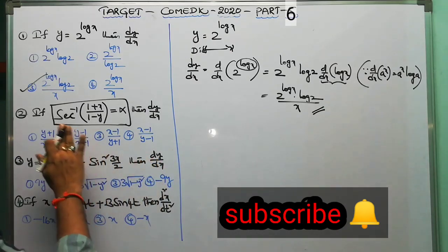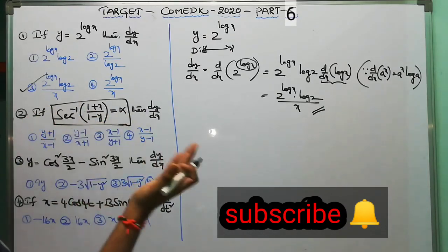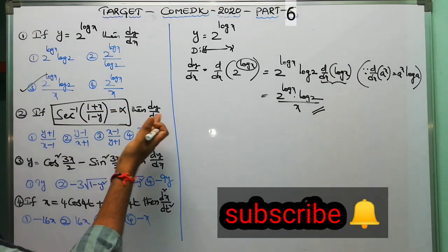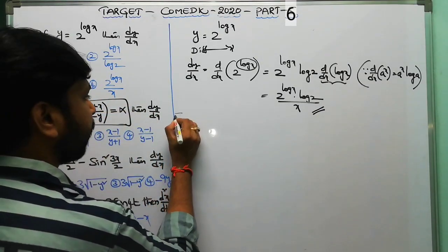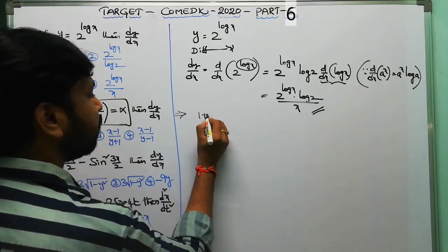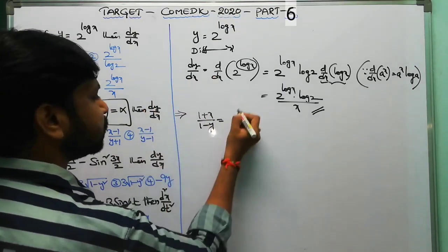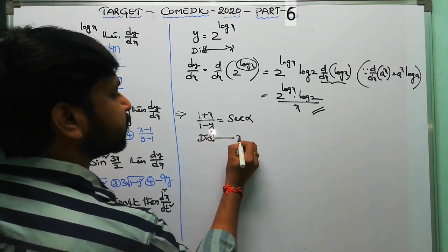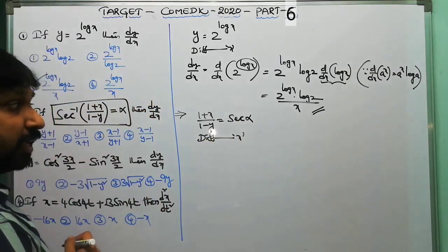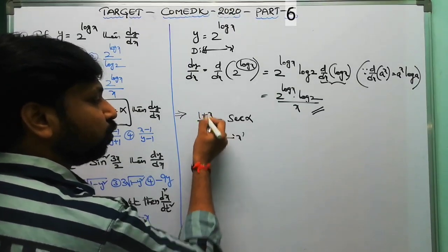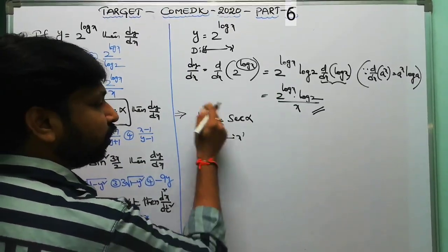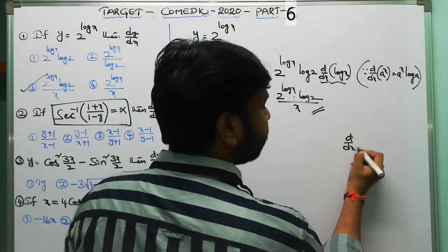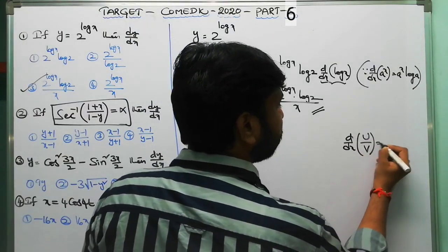Applying secant on both sides gives (1+x)/(1-y) equals sec α. Now differentiate both sides with respect to x. The left side is of the form u/v, so we apply the quotient rule: d/dx of u/v equals (v·du/dx − u·dv/dx) / v².